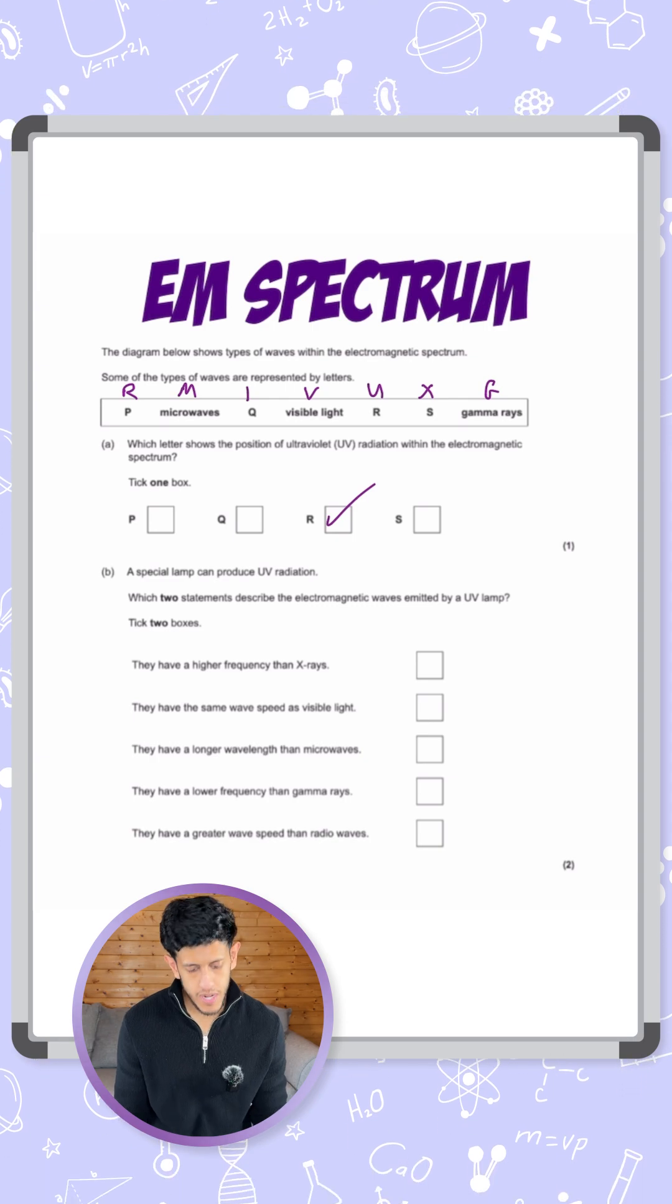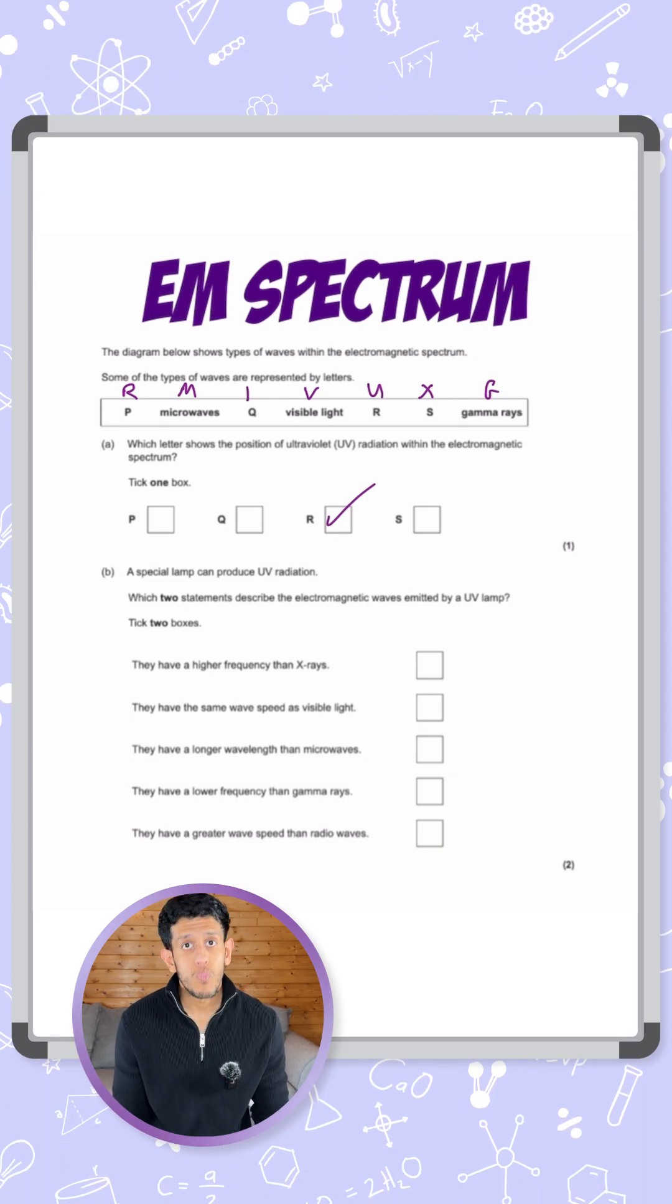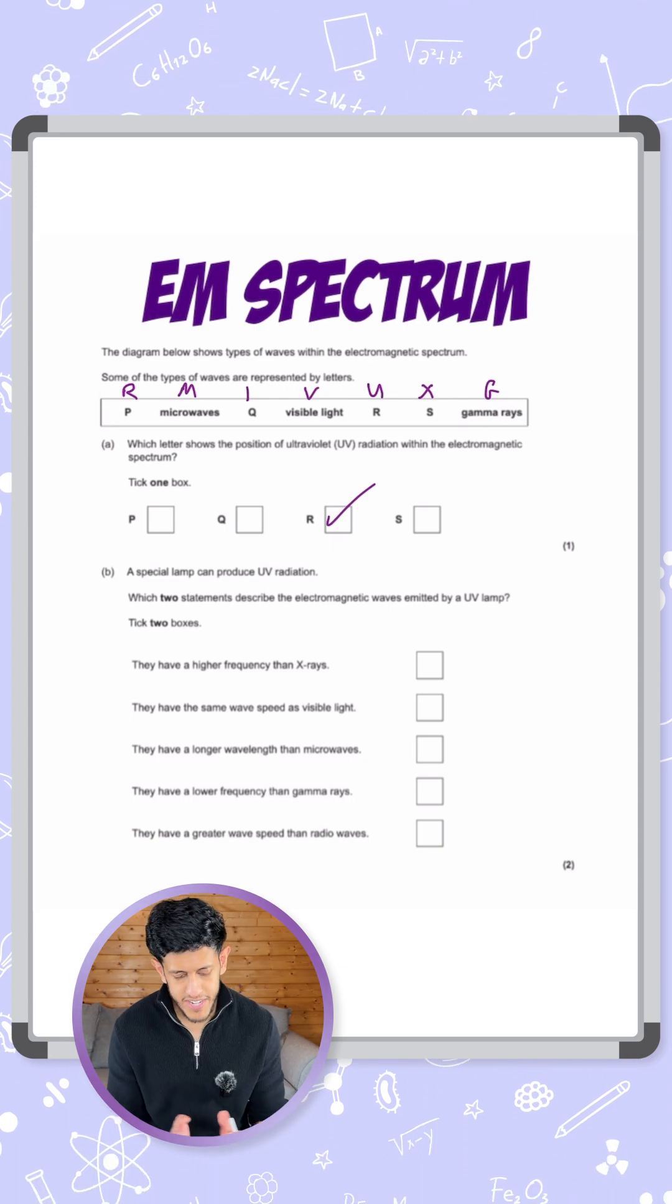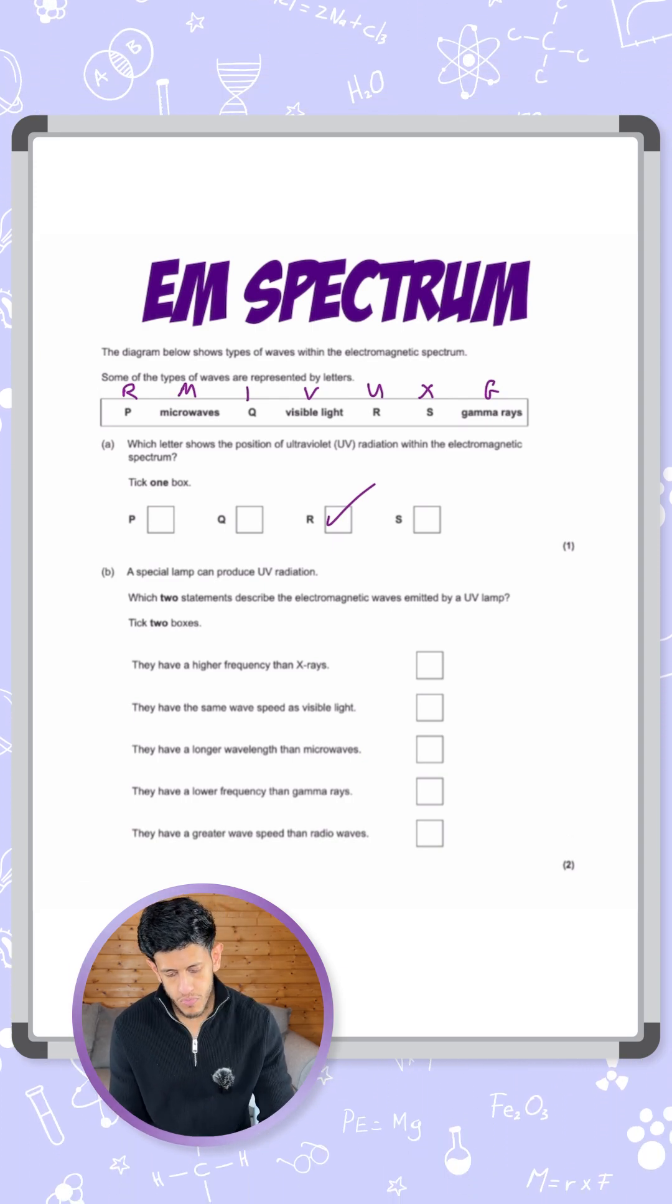Now the second question says a special lamp produces UV radiation. Which two statements describe the electromagnetic waves emitted by a UV lamp? I'm going to have to tick two of these boxes. Let's talk through them.